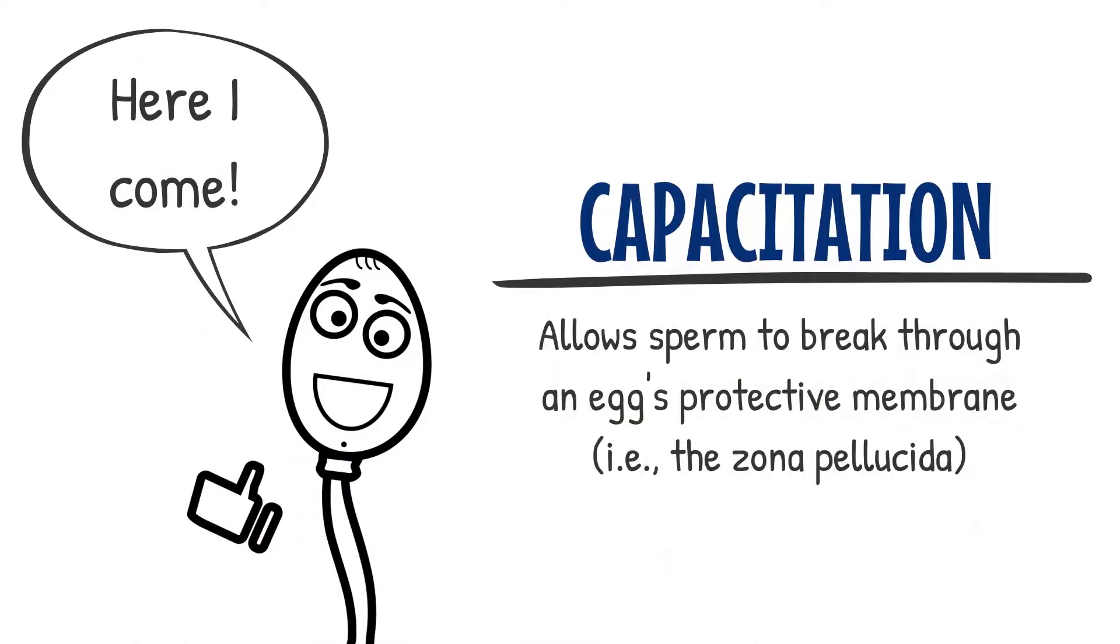Essentially, the sperm becomes able to break through the membrane, known as the zona pellucida, that surrounds the egg.